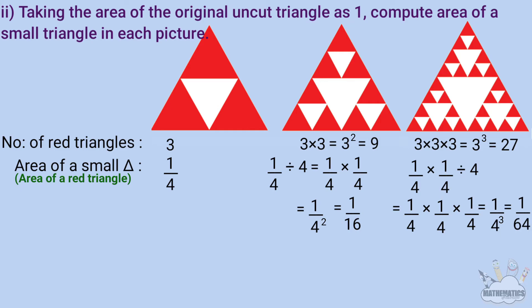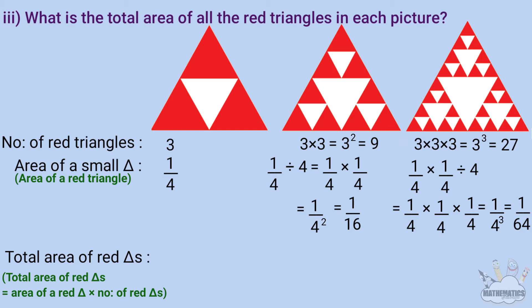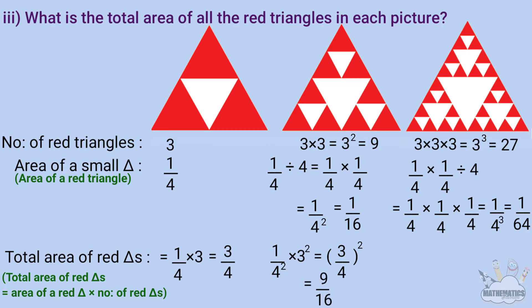The third question: what is the total area of all the red triangles in each picture? Total area = area of one red triangle × number of red triangles. In picture 1: area of one red triangle is 1/4, number is 3, so total = 3 × 1/4. In picture 2: area is (1/4)², count is 3², so total = (1/4)² × 3² = (3/4)² = 9/16.